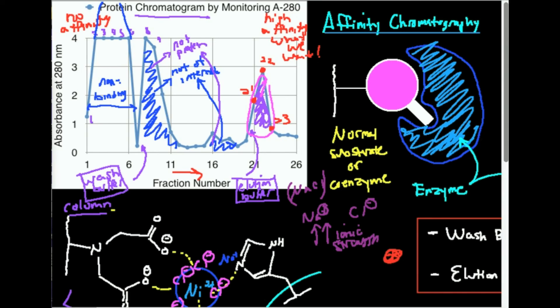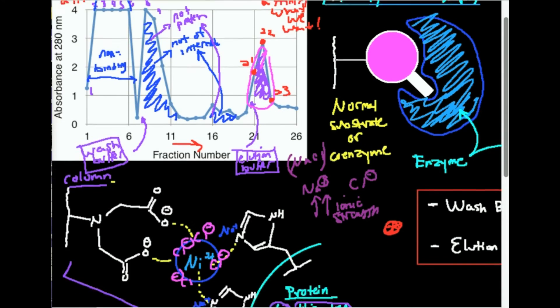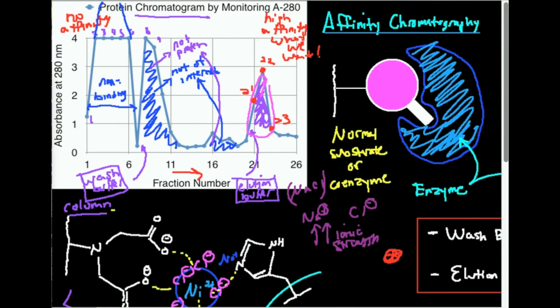That's the basis of affinity chromatography. Generally, you're purifying a protein or enzyme. After these chromatography discussions, this is going to lead us into doing what is called a purification table — that's a really important thing for quantifying how pure your protein is, and we'll do that in the next video. Make sure to like this video, subscribe to the channel for future videos and notifications, and thank you for watching.